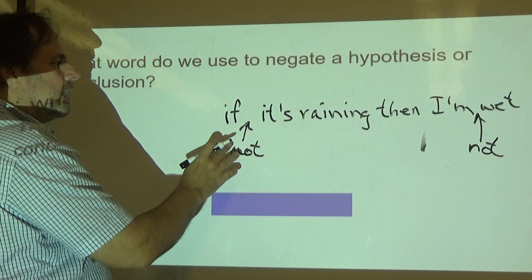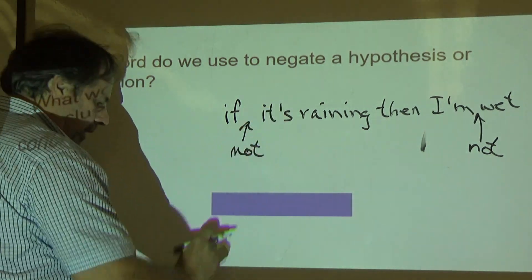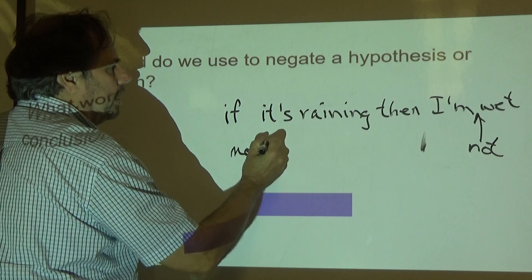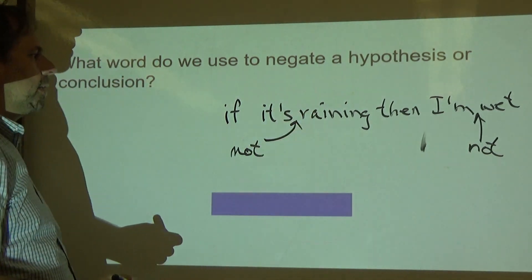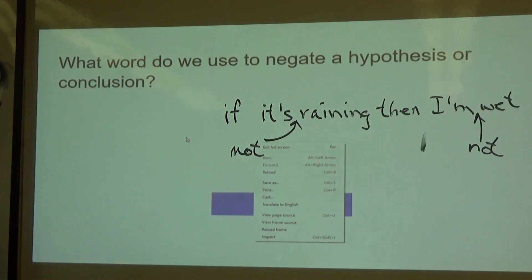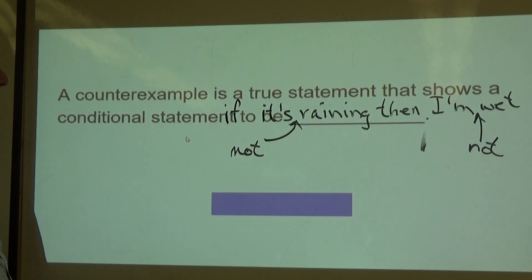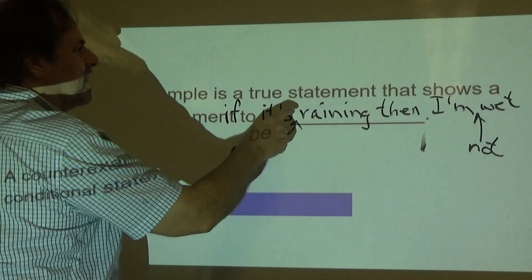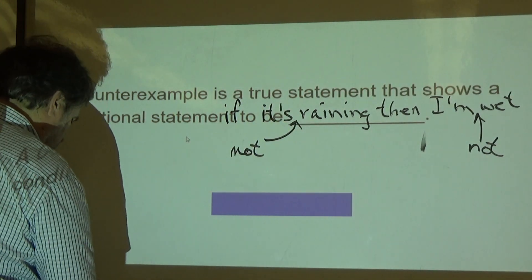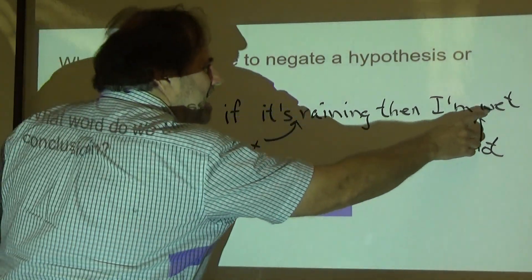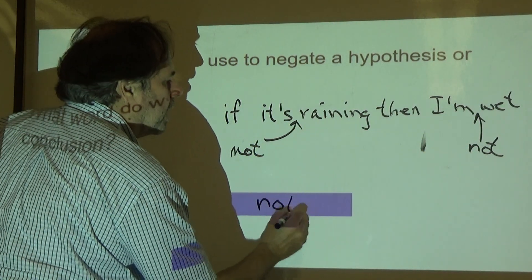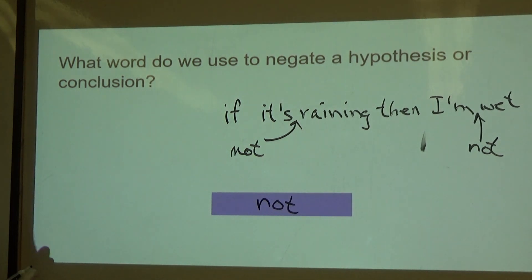So if I were to negate, well, wet would go not there, but here, sorry. Okay, so I would use the word not to negate. All right, if it's not raining, then I'm not wet. So the word is not.